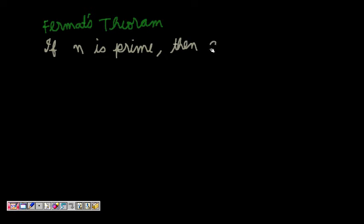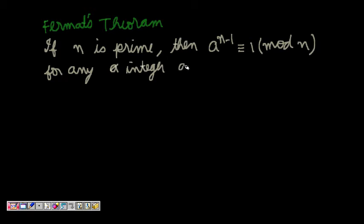if n is prime, then a to the power of n minus 1 modulo n is equal to 1 for any integer a less than n. This is a very beautiful thing, so you can try this out,